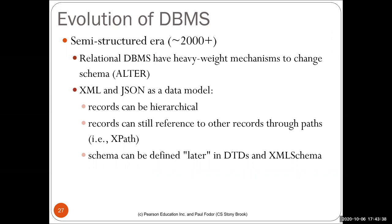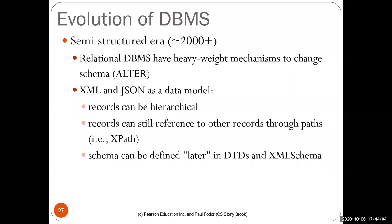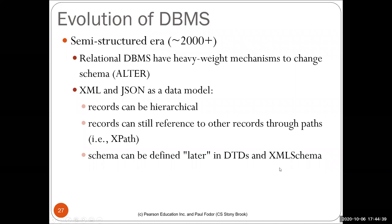Relational databases are hard to change — if you alter a table by adding or deleting a column and the table is very large, it takes a long time because the physical level is updated. JSON and XML caught on easily because records can be hierarchical, can still be referenced, and query languages like XPath were developed to access elements in XML documents. Schemas can be defined later in a DTD file or XML Schema.